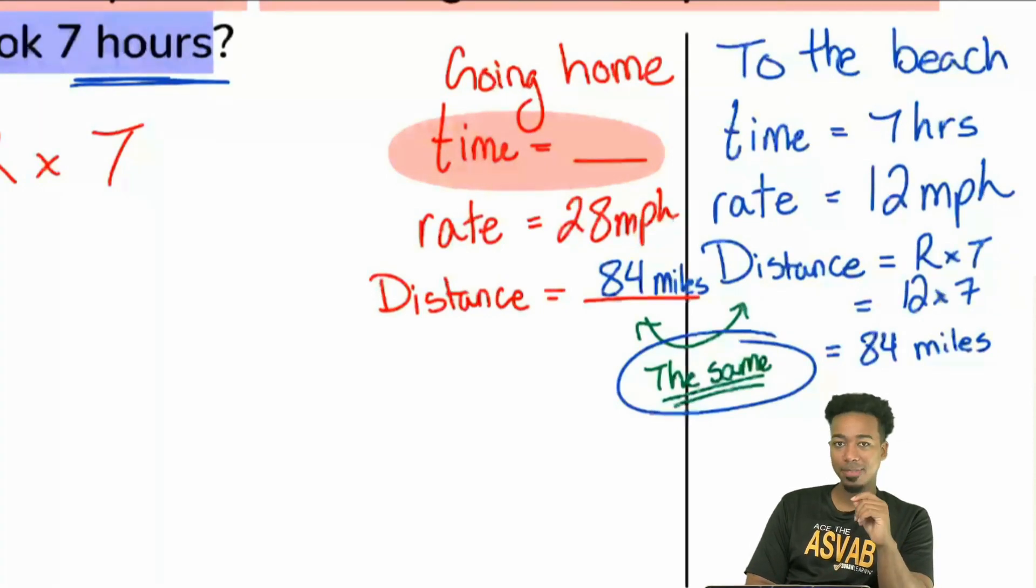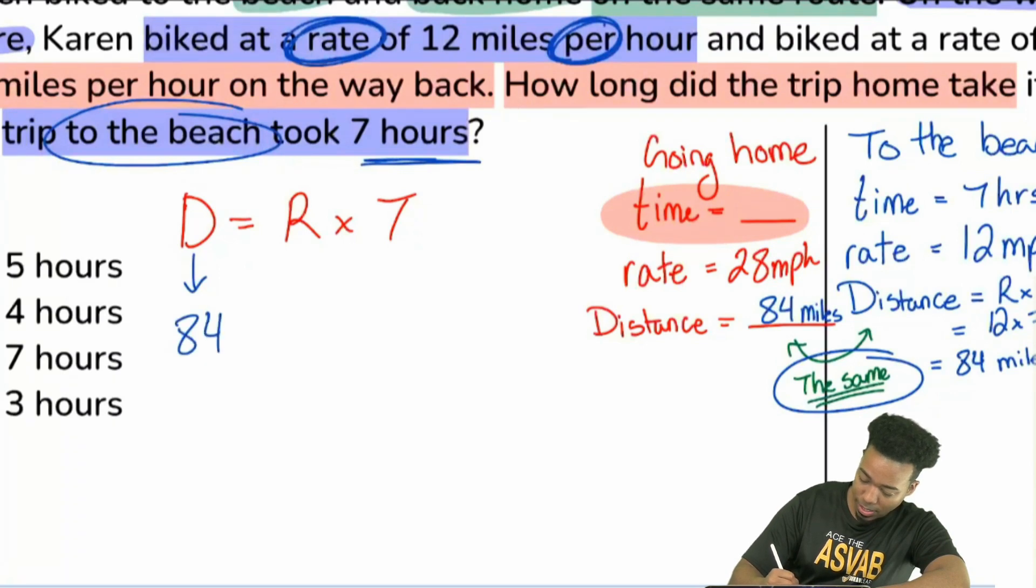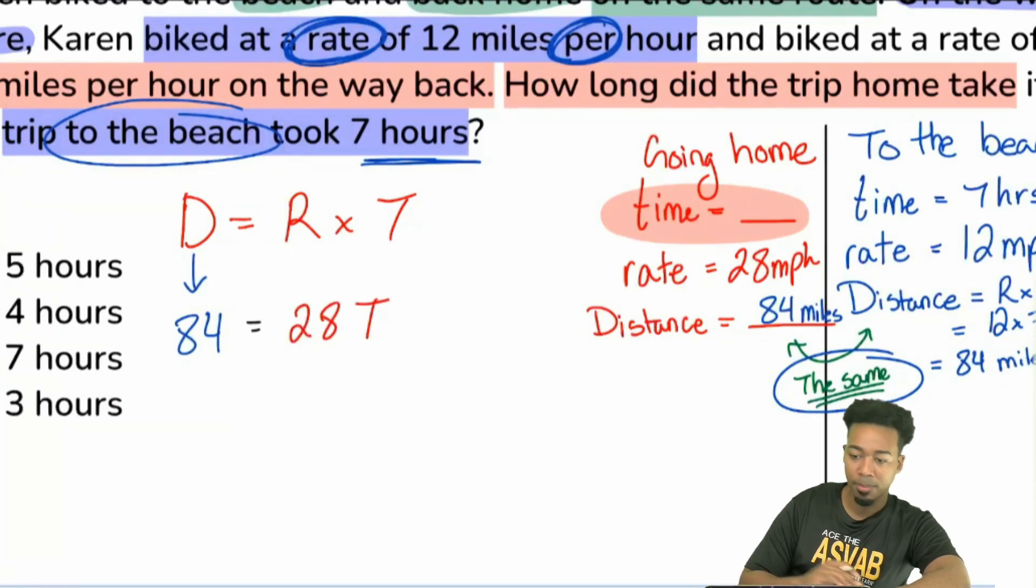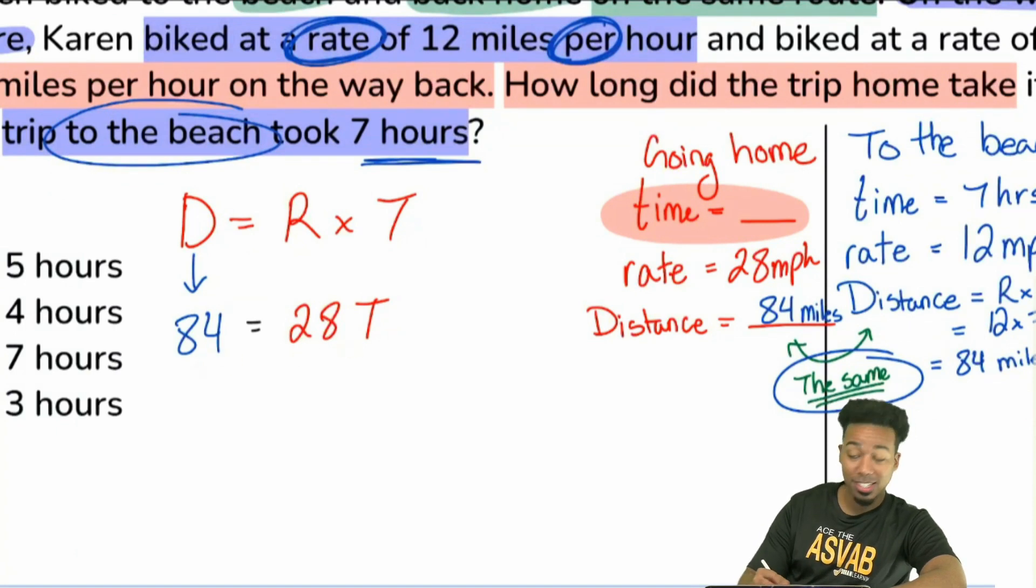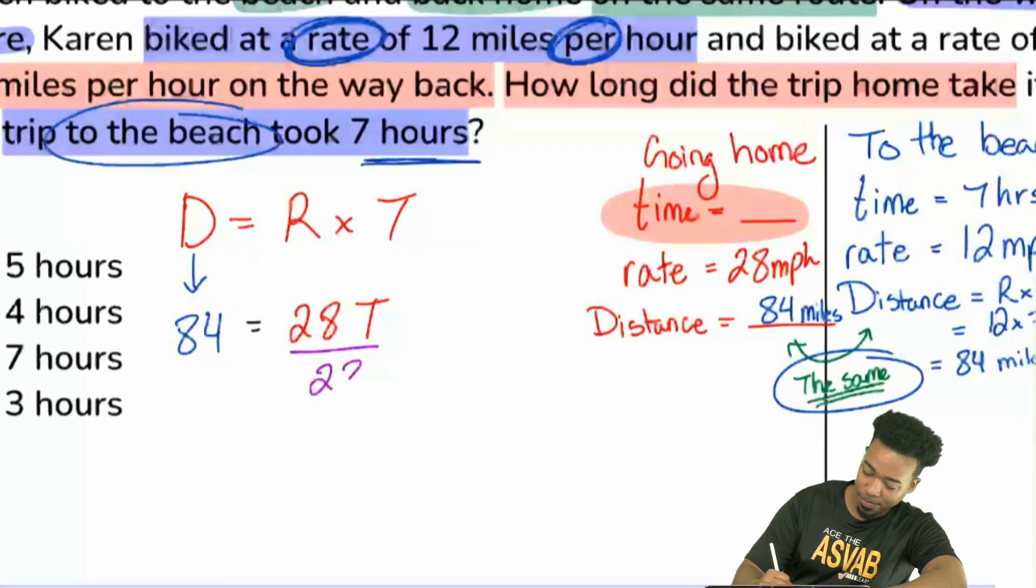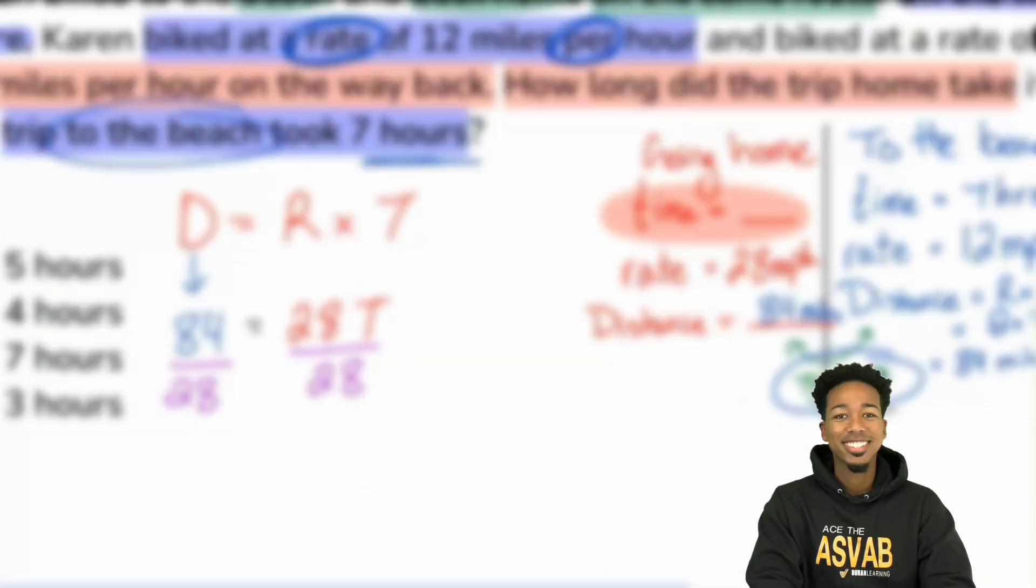And now that we have that, this is where we can solve the problem. This is where we can set up our distance rate time and say my distance is 84 miles. My rate is 28 miles per hour. And I am looking for time. Exactly. All we're going to do now moving forward is solve that equation. We have to work backwards. We have to divide 28 on both sides to get that done, because we want to hit T by itself. So let's go ahead and do it. And we're set. Divide by 28 on both sides. That's going to cancel out the 28.